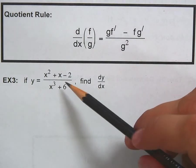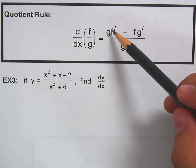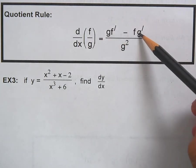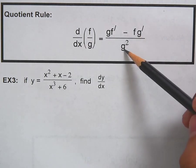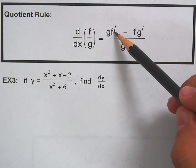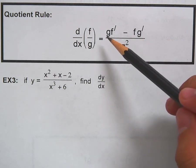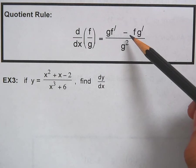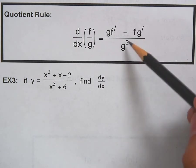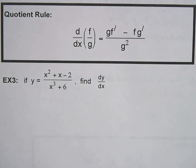Here's how to remember the quotient rule: g is the bottom, f is the top. The rule is: bottom times the derivative of the top, minus top times the derivative of the bottom, all over the bottom squared. A handy mnemonic: 'bottom d-top minus top d-bottom, over the bottom squared.' Say it a few times — bottom d-top minus top d-bottom.